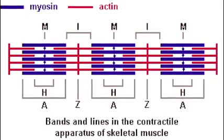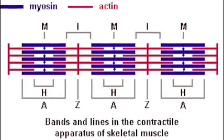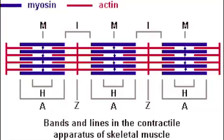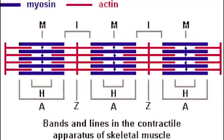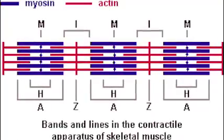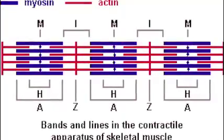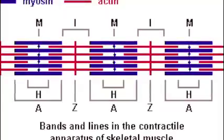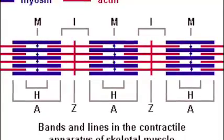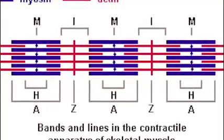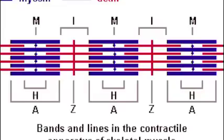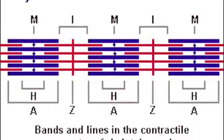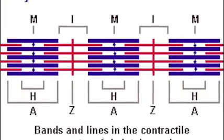There are two parts to the striations. The light band is known as the I-band and is made up of actin filaments attached to the Z-lines. The A-bands are known as the dark bands, and they consist of myosin and actin filaments. The H-zone consists of thick filaments with a thickening known as the M-line. The myofibril from one end of the Z-line to the other end of the Z-line is known as the sarcomere.